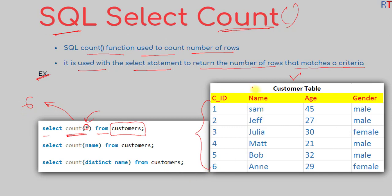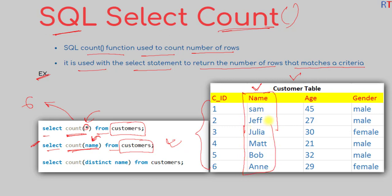We can also count the number of values one particular column has. In that case we pass the column name to the COUNT function, like SELECT COUNT(column_name) FROM customers. This query will return the number of records that column has, and because the column has six values, this query will return the number six.